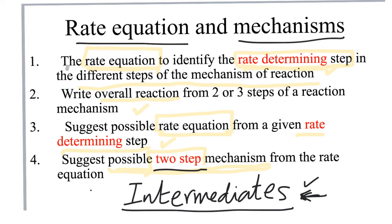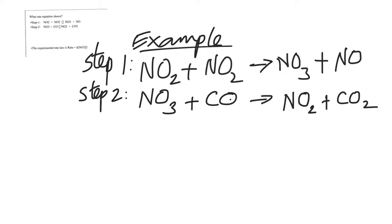The examiners are really flexible in what they accept as intermediates. So those are the four objectives we're going to look at today. Let's have a look at this example. What you have are two steps of a single reaction — the mechanism is given. The key thing to notice is that you have the species NO3 being produced in one step and used in another.